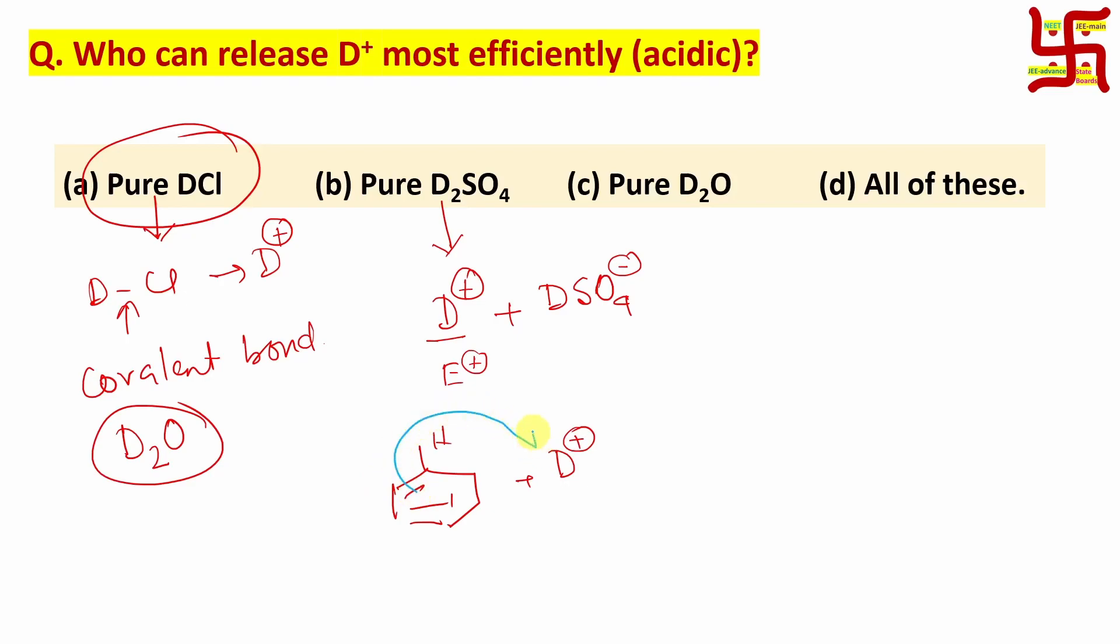What happens? This bond will go and attack. So ultimately, it will produce this plus charged intermediate. This is hydrogen, this is deuterium. By the way, this part is aromatic - aromatic means it is stable. But in this case, aromaticity is gone. This is the sigma complex.